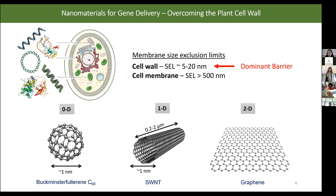We can consider what dimensionalities of nanomaterials would best overcome this barrier. We need to satisfy the size exclusion limit while also having an appreciable surface area to volume ratio for chemistry and loading of biomolecular cargoes. Zero-dimensional carbon materials are small enough but don't have enough surface area; extruded two-dimensional graphene has high surface area but no longer satisfies the size limit. So we largely focus on one-dimensional materials.